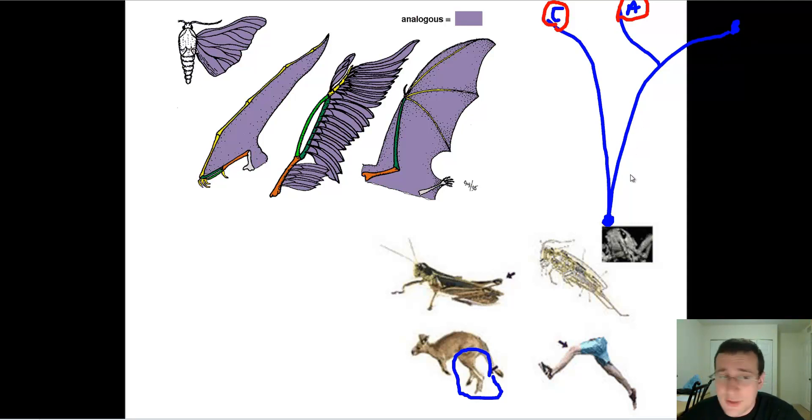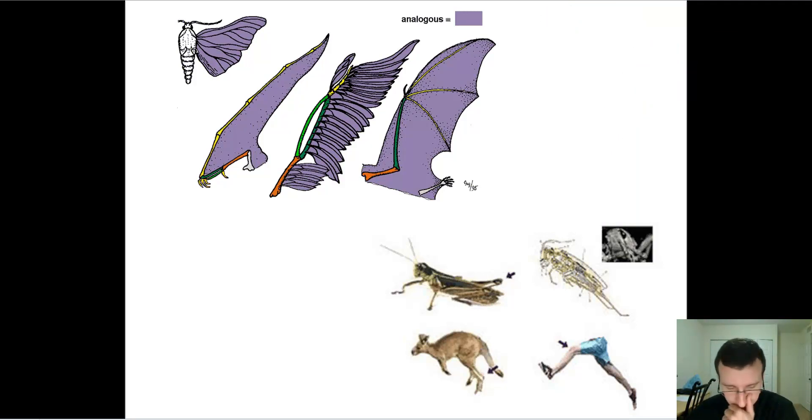For example, we see wings in the bat, the fly, and the bird. But if you think about what was the closest common ancestor that bat wings, bird wings, and fly wings have in common, you've got to go back all the way to invertebrates. And there's way too many animals in between the tree of life that do not have wings. In other words, it's not a homologous structure. It evolved separately in each of these animal groups because of environmental pressure.